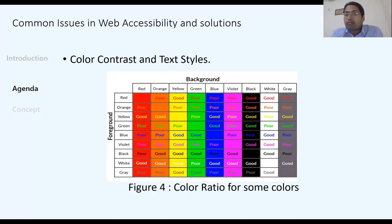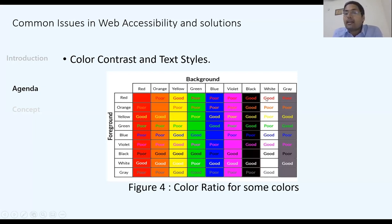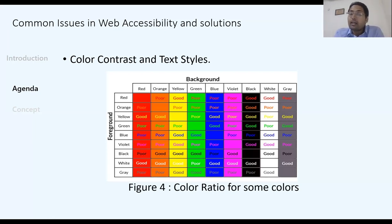Color contrast must be chosen wisely. For example, if your foreground text is red on an orange background, it is a poor combination and cannot be seen clearly. But white text on a red background is visible and good. Color contrast should be chosen so that it is perceivable by all users, including those with disabilities.